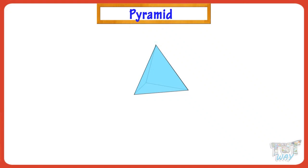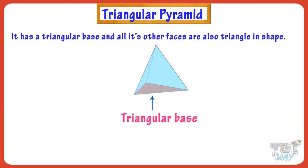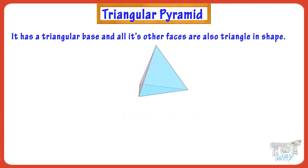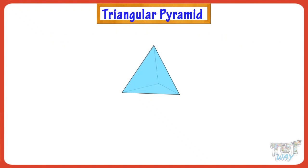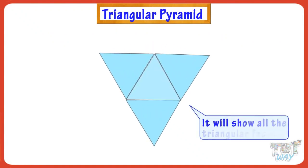Now let's make nets of pyramids. Here we have a triangular pyramid. It has a triangular base, and all its other faces are also triangular in shape, that converge to a single point at the top. Now let's see how its net would look if we open it. It would look like this — showing all the triangular faces.